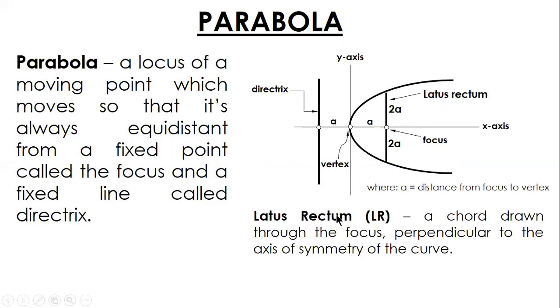And then we have the latus rectum. It is a chord drawn through the focus and also perpendicular to the axis of symmetry. For a parabola, the length of the latus rectum is equal to 4a. For ellipse and hyperbola, it's different. Parabola is 4a.